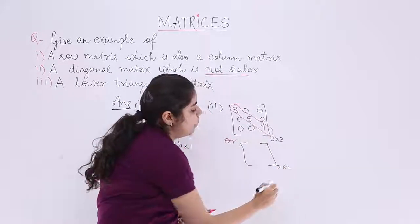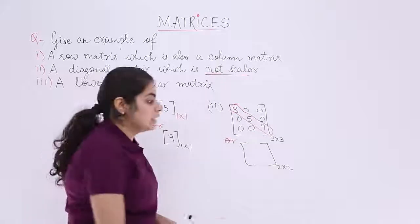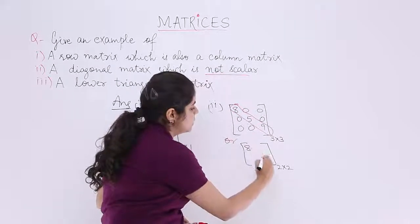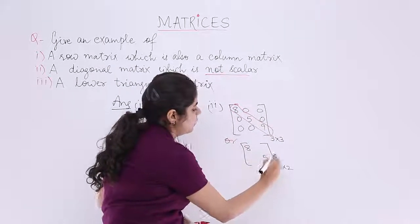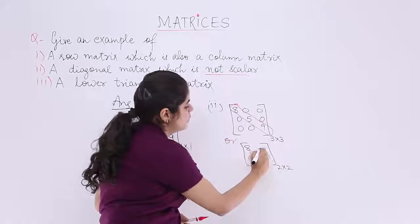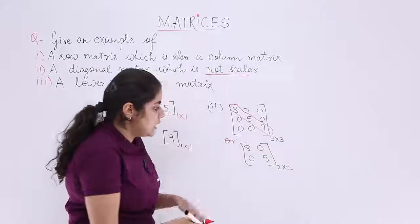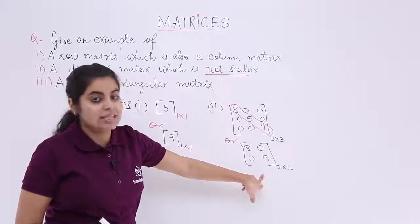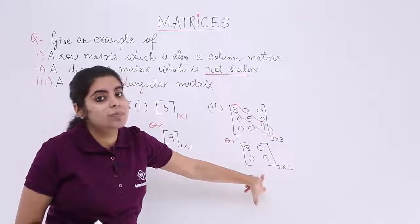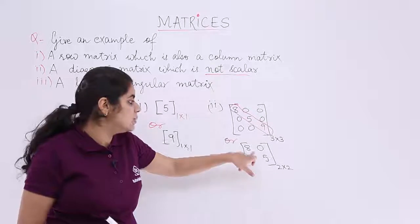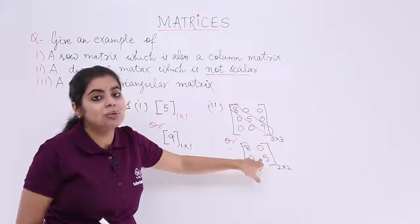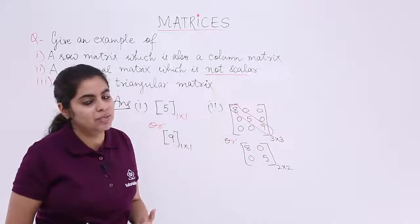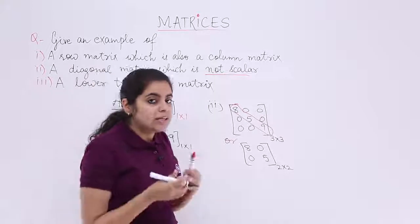Another example could be a 2×2 matrix with diagonal elements 8 and 5 and the rest as 0s. Is this a diagonal matrix? Yes. Is this a scalar matrix? No. Why? Because the elements are not equal — they are not 8, 8 or 5, 5. This part is also done.